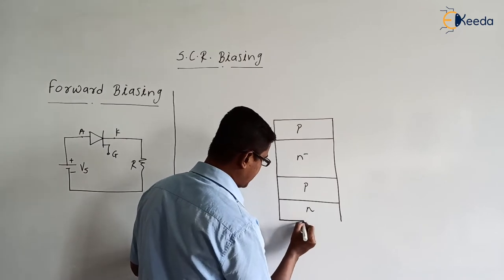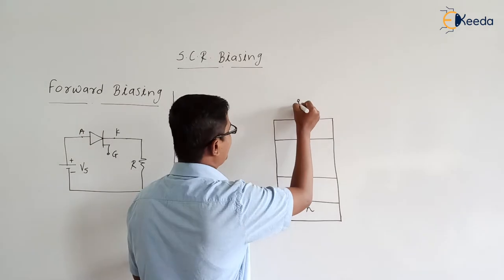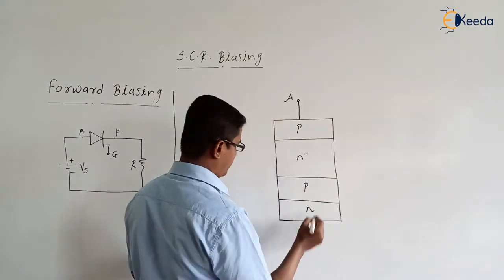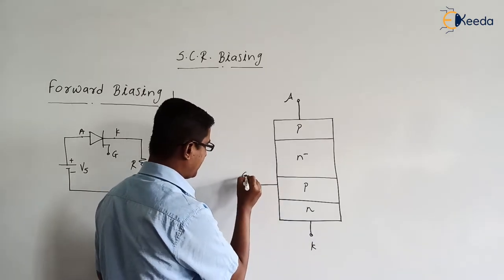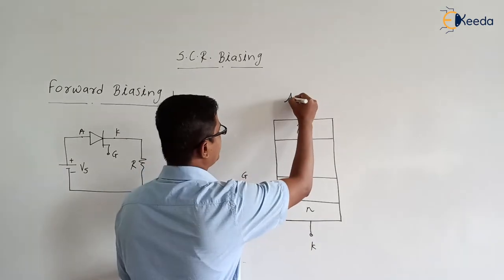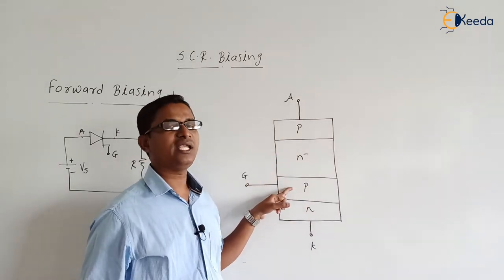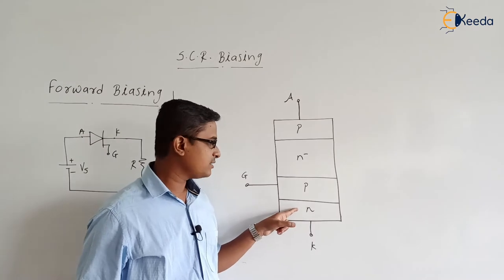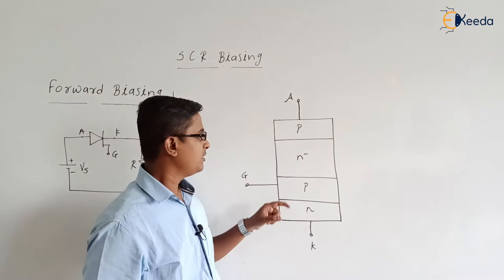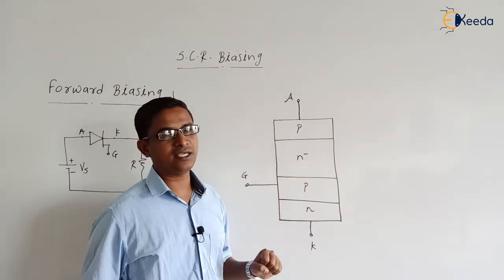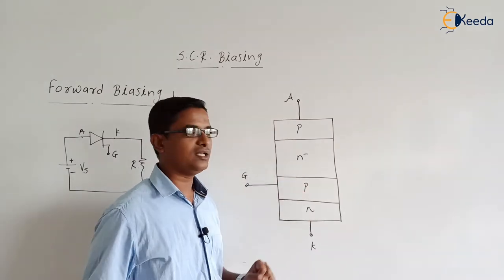Here we have the construction of the SCR. It is a three-terminal device — anode, cathode, and gate. The upper P-type layer, the inner P-type layer, and the outer N-type layer have the same width. But the inner N-minus layer has an increased width compared to the remaining three layers.